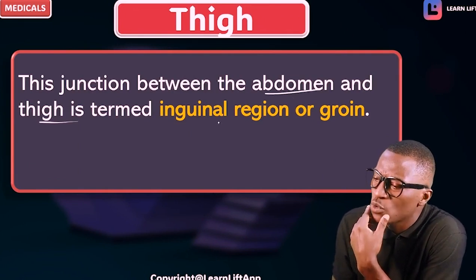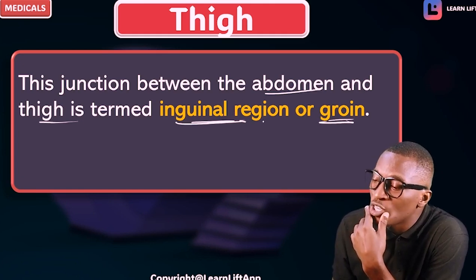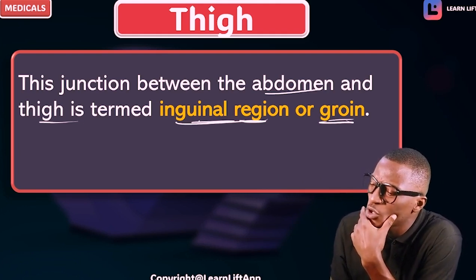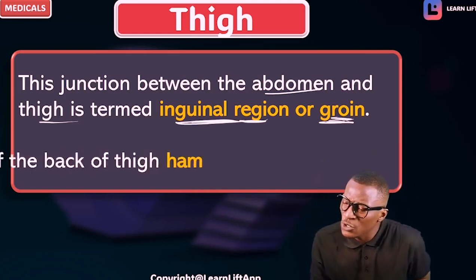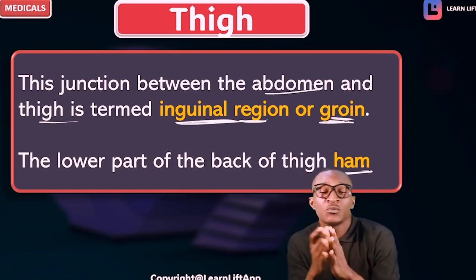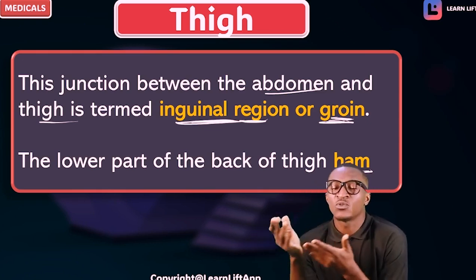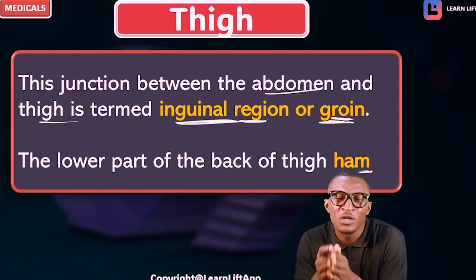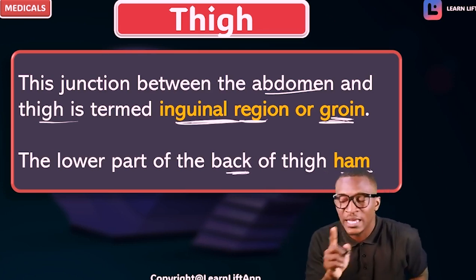Still on the thigh — take note that the junction between the abdomen and the thigh is what we call the inguinal ligament, also called the groin. That region is called the inguinal region. The junction between the abdomen and the thigh is called the inguinal region, also called the groin. Also take note that the lower part of the back of the thigh is called the ham, and the muscles there are called the hamstring muscles.